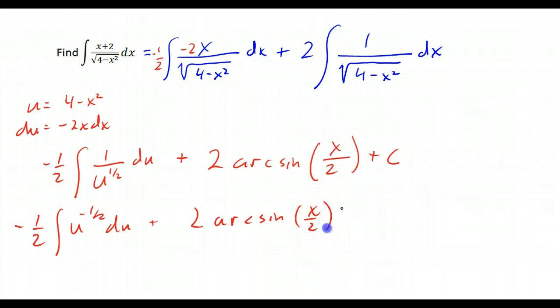u to the negative 1 half du plus this piece we've already done, and we get negative 1 half. I add 1 to negative 1 half and I get positive 1 half. Dividing by 1 half is the same thing as multiplying by 2, and I'll put the plus c with that c over there.